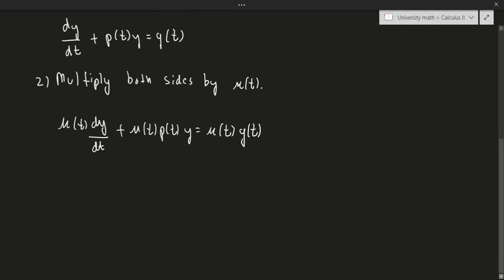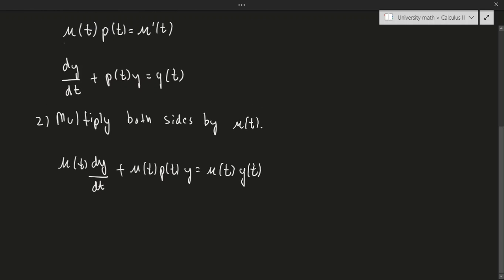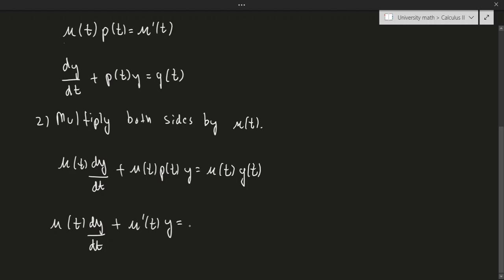Just to be very clear, this is going to be a video about derivation — in the next video I will actually be doing examples. Now, we know that mu of t times p of t is mu prime of t, so we can replace that part with mu prime of t. This gives us mu of t times dy by dt plus mu prime of t times y equals mu of t times g of t.